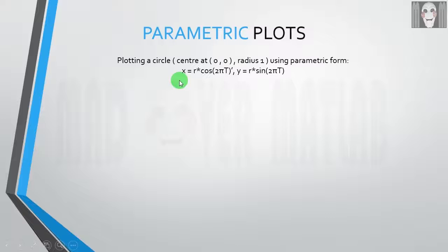This is the equation of circle in parametric form. The x coordinate is given by r*cos(2πt) where r is the radius of the circle and t is the parameter. Similarly, the y coordinate is given by r*sin(2πt).